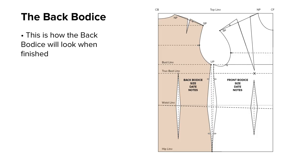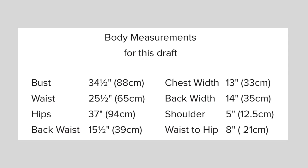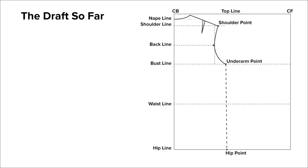In part 1, we drafted the back bodice. This is how the back bodice will look when finished. Now we turn our attention to drafting the front. The bodice front is drafted side by side with the back and shares important construction lines. Here again are the measurements I am using for this draft. This is the draft so far.